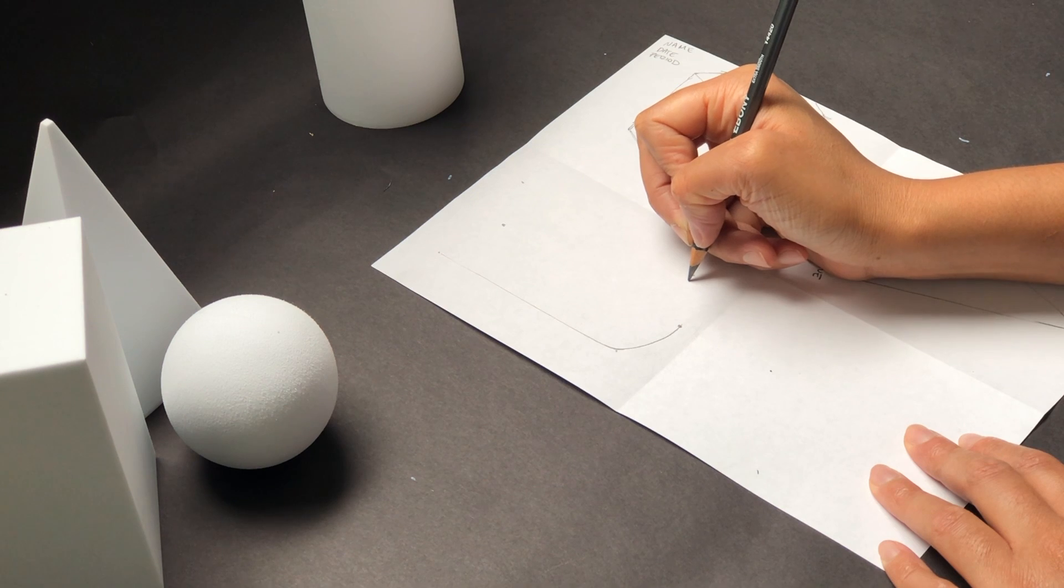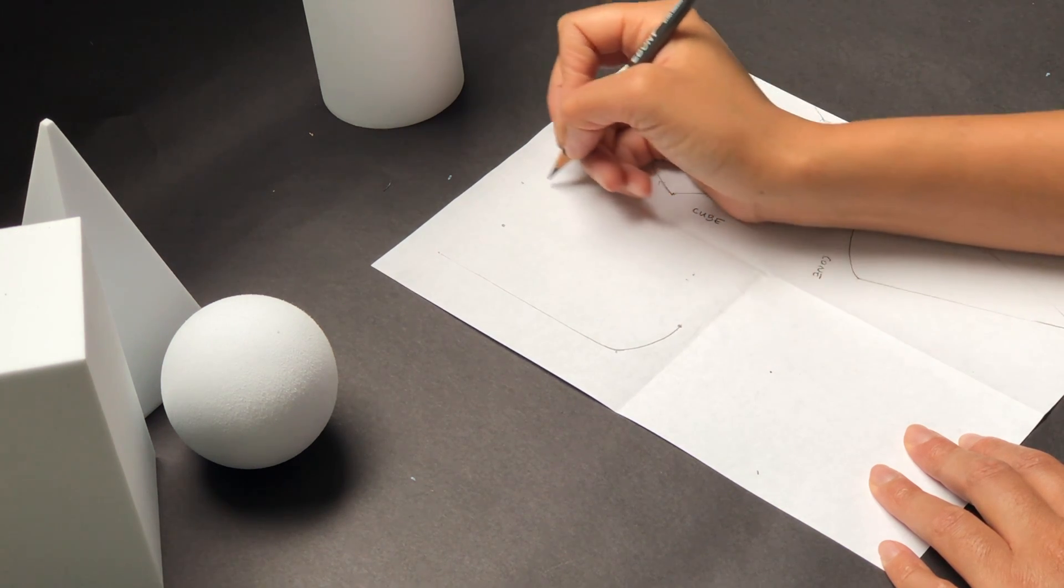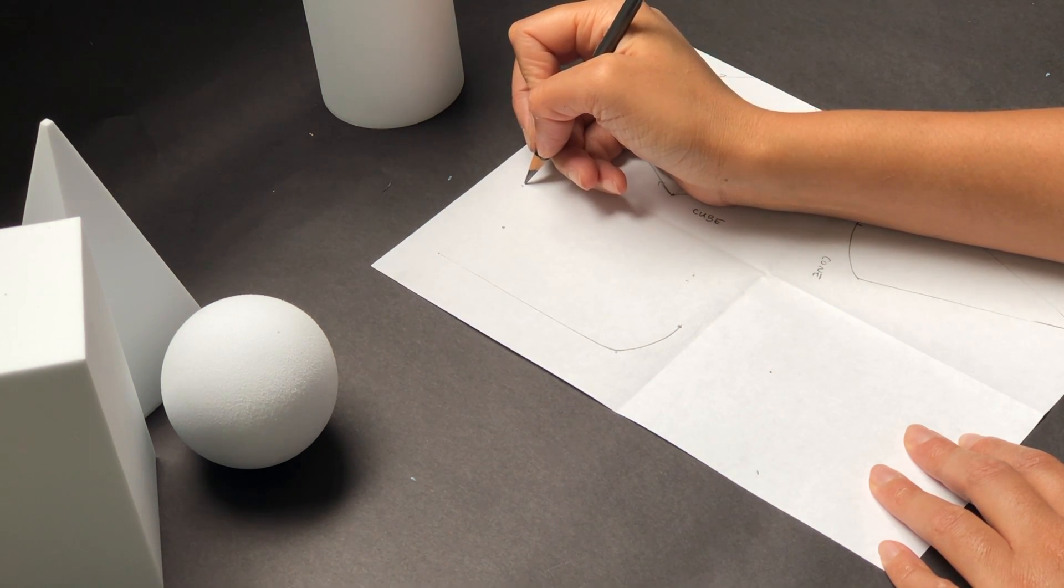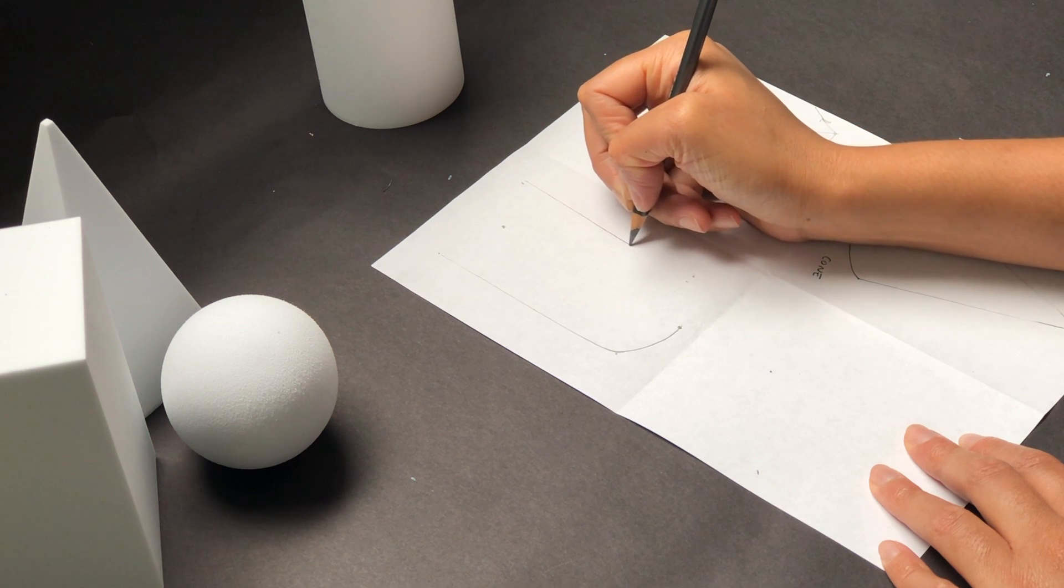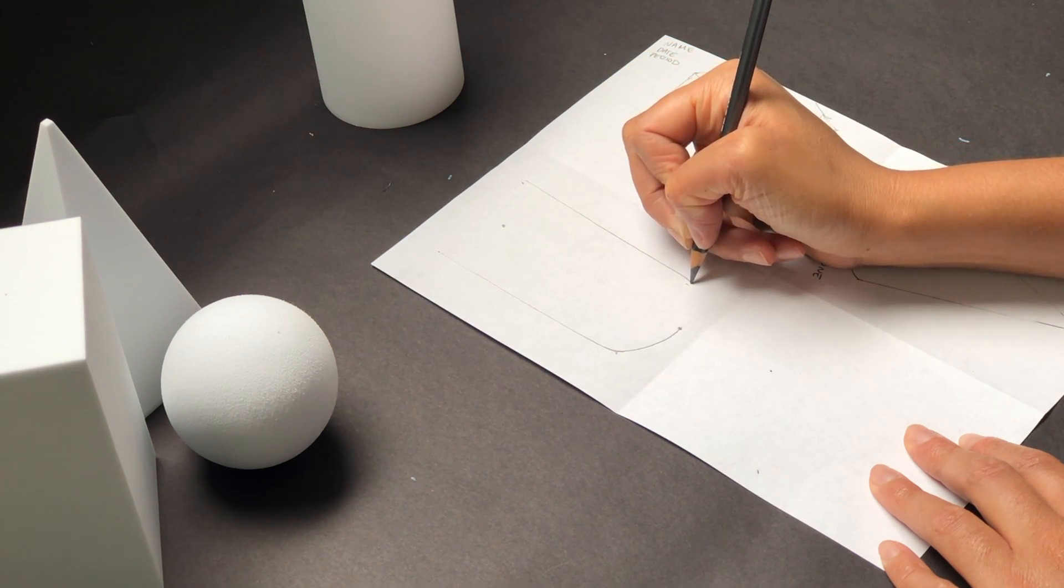And then I'll drag from my shoulder straight down and curve right at the bottom so that I can have a curved edge and create the bottom of the cylinder.